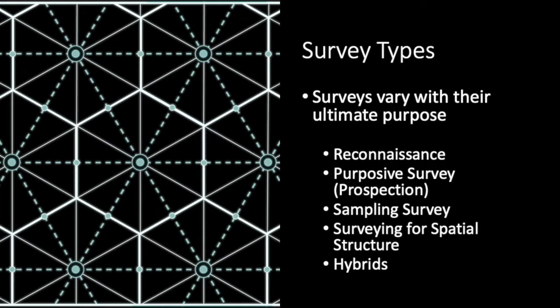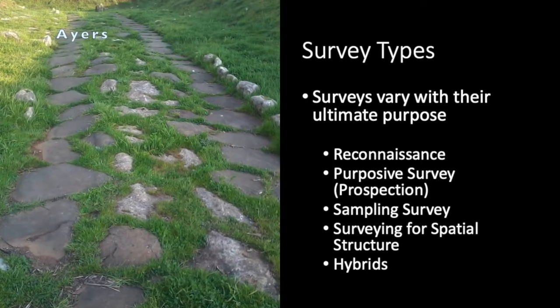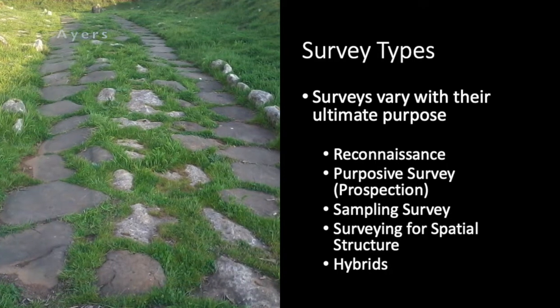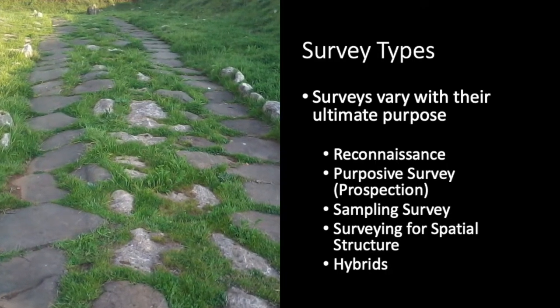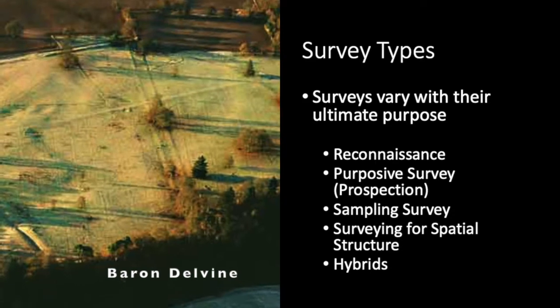Surveying for spatial structure involves searching for patterns in the relationships among sites and features that something like a random sample would be highly unlikely to reveal. For example, we might be interested in finding a hierarchy among site types, or detecting road systems or canal systems. In many cases, aerial survey will be a key part of doing this kind of research.